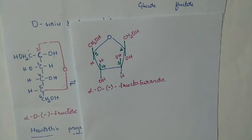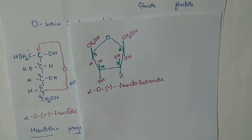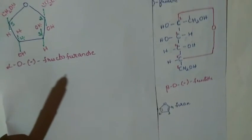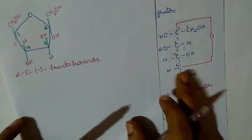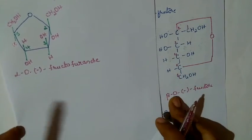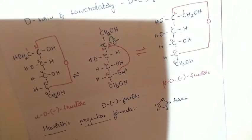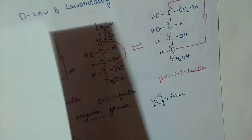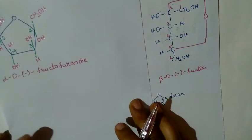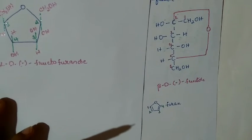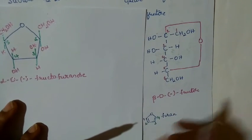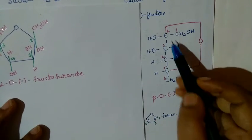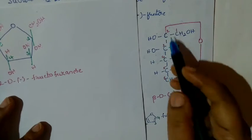Likewise, we can write the structure for beta D-minus fructofuranose. We shall compare that with the cyclic open-chain structure. This is our beta D-minus fructofuranose. The second carbon is bonded to the fifth through an oxygen atom.